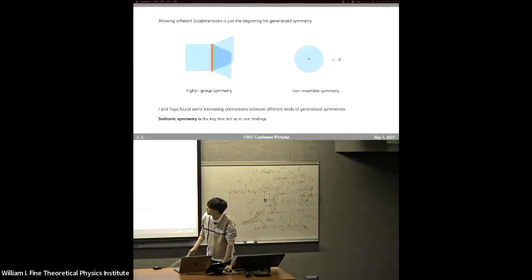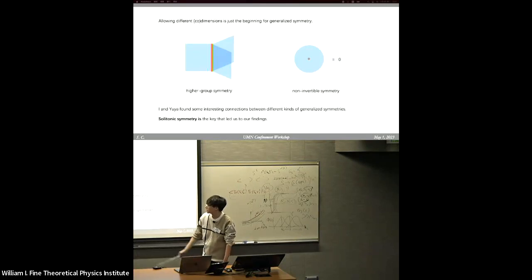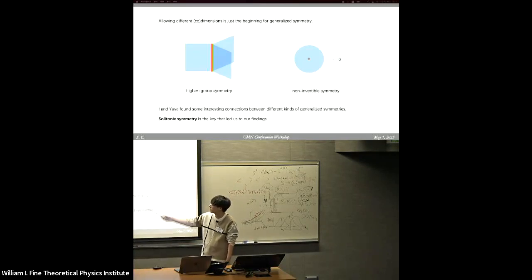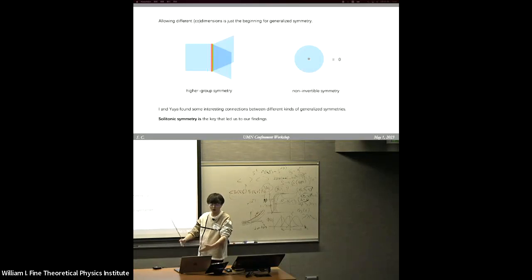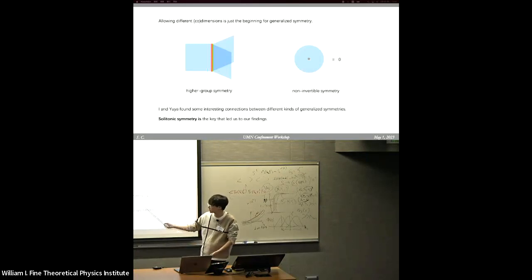Allowing different dimensions is just the beginning to get generalized symmetry. We can also generalize symmetry in many other ways. The first way is to consider the interaction between different dimensions. For example, if we have some codimension-p topological operators and connect them together to make a web, then on the junction we can have some higher codimensional topological operator. So the topological operators in different codimensions will interact with each other and make up a more complicated algebraic structure.